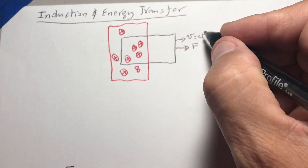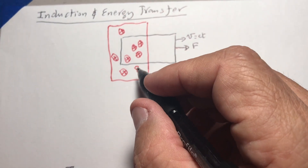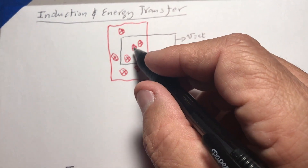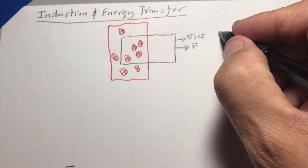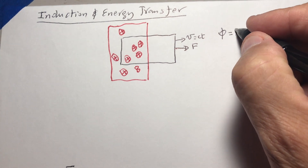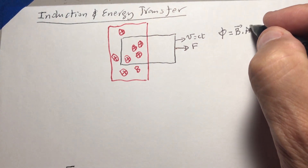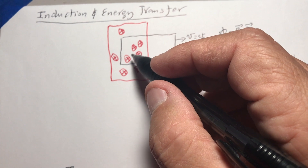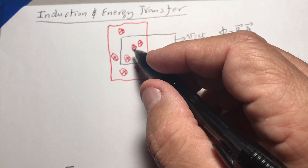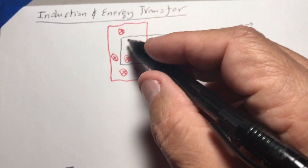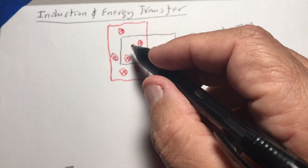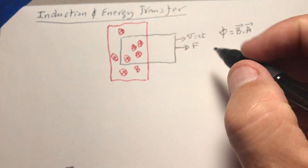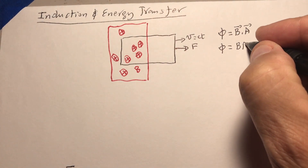We see what happens to the wire as we pull it. We have a flux because, as I mentioned before, the flux is equal to the B field dot the area. The vector area is perpendicular to the surface, and the B field is also perpendicular to the area — going into the page — so they are parallel. We can simply say the flux equals the B field times the area.